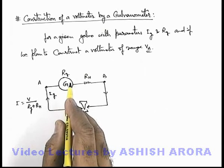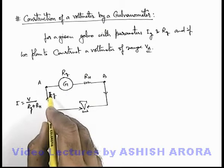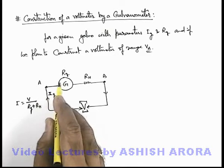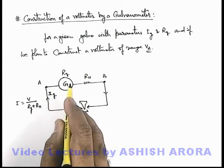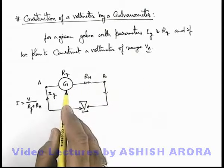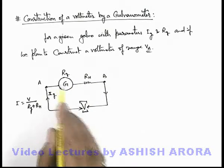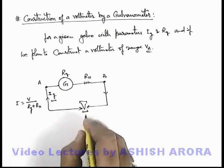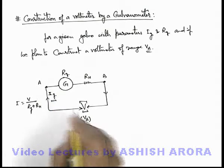And in this situation, if a current I_g passes through the same galvanometer, it'll be deflected by full scale and it gives us a reflection that it is measuring the voltage V_a. If it is looking like a voltmeter, so I_g must pass when a voltage V_a is applied across it. That is our aim.